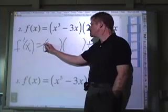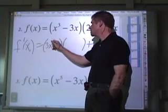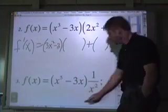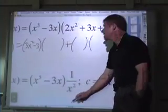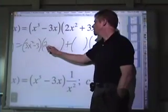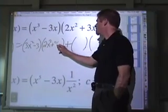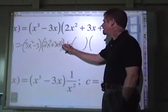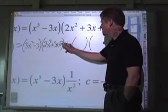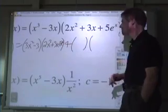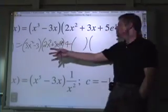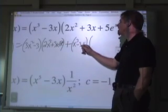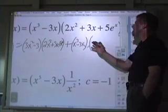Derivative of the first is three x squared minus three times the second. That means just copy down the second factor. Two x squared plus three x plus five e to the x.